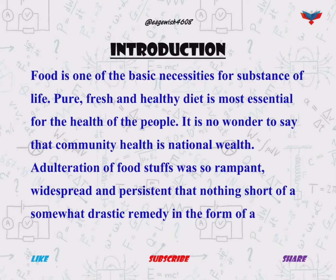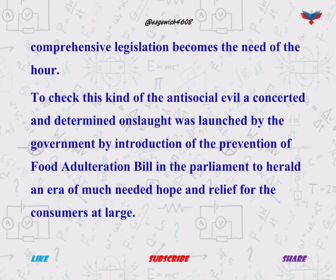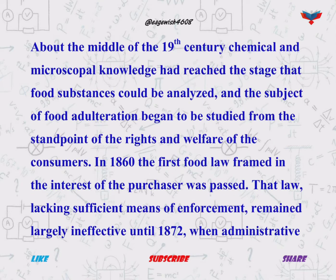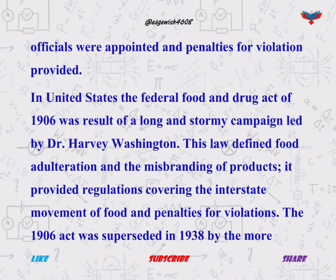In the introduction we will give a basic idea about food adulteration, such as: an adulterant is any substance that is added to food in order to reduce the quality while increasing the quantity. Food adulteration is the process of adding an adulterant to a food product.